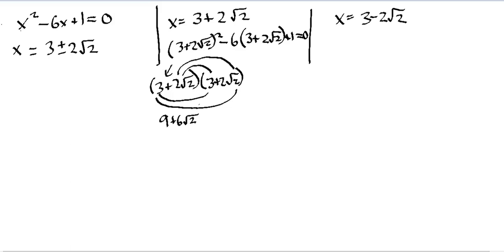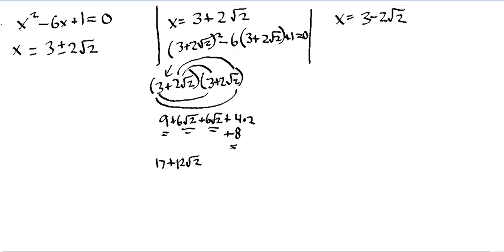The insides: two times the square root of two, times three — again the same sign — gives another positive six times the square root of two. And the lasts: two times the square root of two, times two times the square root of two. Both are positive, so we have a positive result. Two times two gives four, and the square root of two times the square root of two gives two, so this is like multiplying four times two, which is eight. Now we can combine: nine plus eight equals seventeen, and six times the square root of two plus six times the square root of two equals twelve times the square root of two.